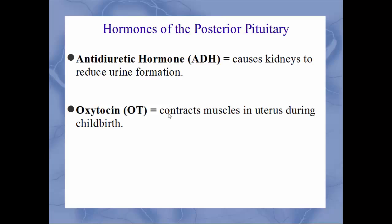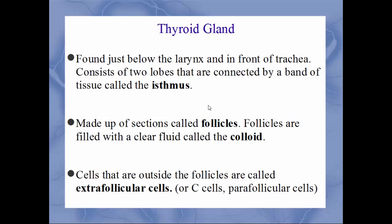The thyroid gland is found just below the larynx and in front of the trachea. It consists of two lobes in a butterfly shape connected by a thin band called the isthmus. It is made up of sections called follicles filled with a clear, viscous fluid called colloid. The cells outside the follicles are known as extra-follicular cells — also called C-cells or parafollicular cells.